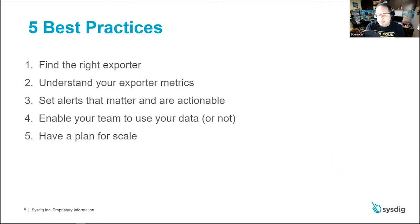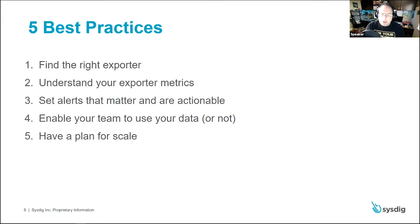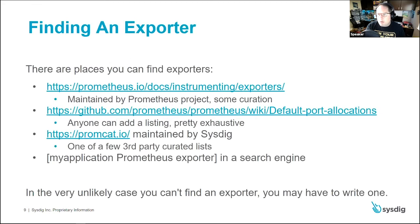Let's jump into the five best practices. The first is finding the right exporter. We'll also cover understanding the metrics coming out of a chosen exporter, being able to set alerts that are significant, enabling your team to use the data you're pulling with Prometheus exporters, and having a plan for scale as you implement exporters.